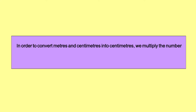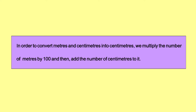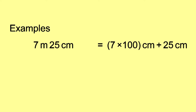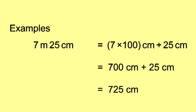In order to convert meters and centimeters into centimeters, we multiply the number of meters by 100 and then add the number of centimeters to it. Example: 7 meters 25 centimeters is equal to 7 × 100 centimeters plus 25 centimeters, which is 700 centimeters plus 25 centimeters, is equal to 725 centimeters.